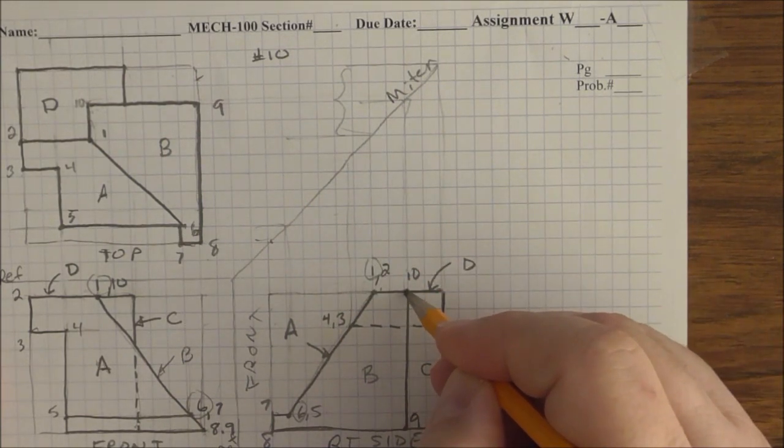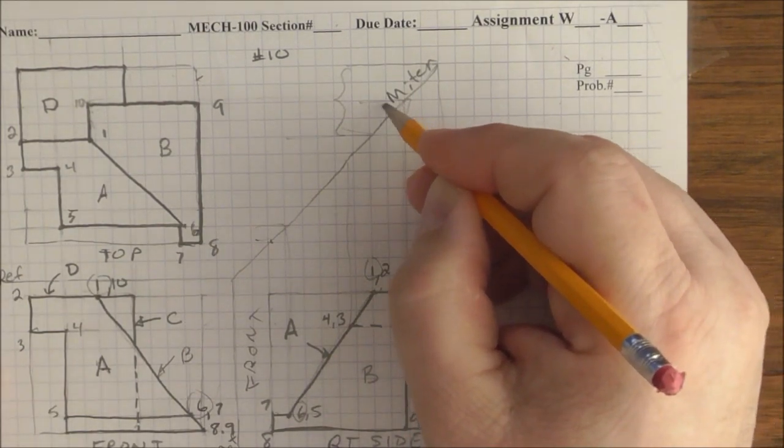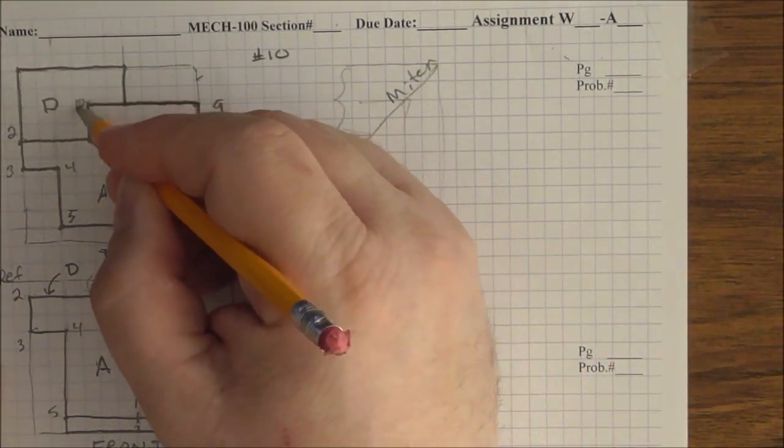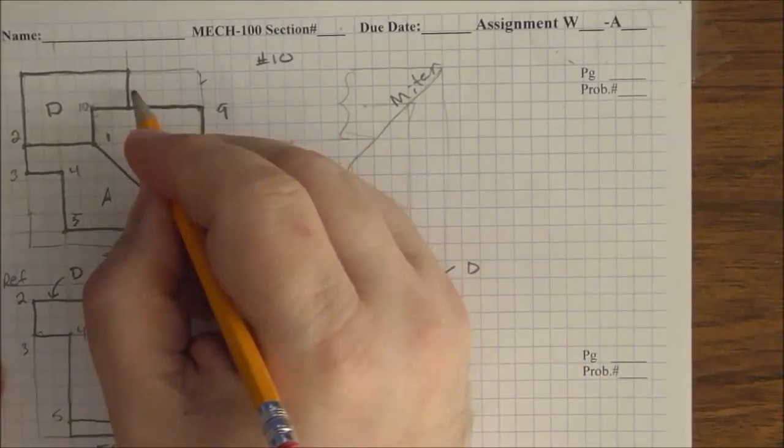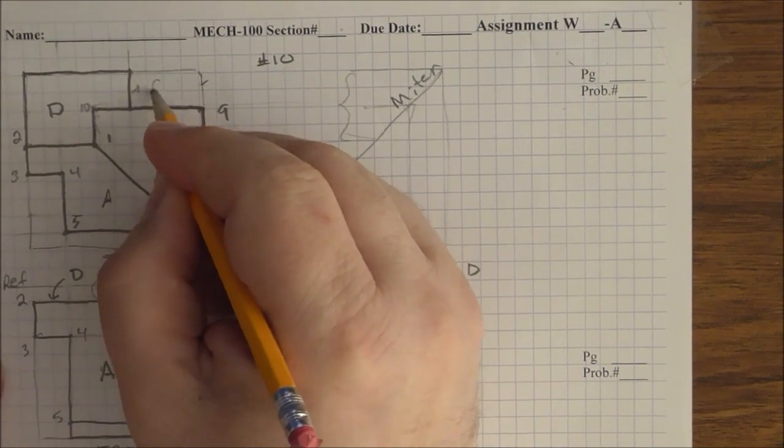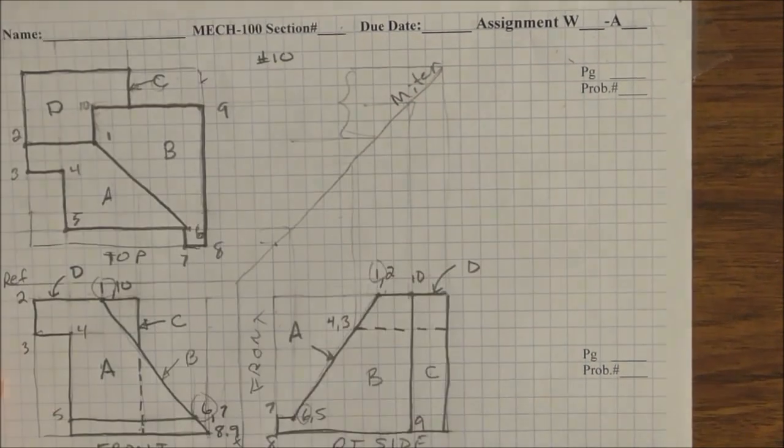Same thing with here. This point, this line intersecting D, means that if we project that up and over, yeah, right here, we have a change in direction. Okay, that's C. Let's label that. That's a vertical plane, C.